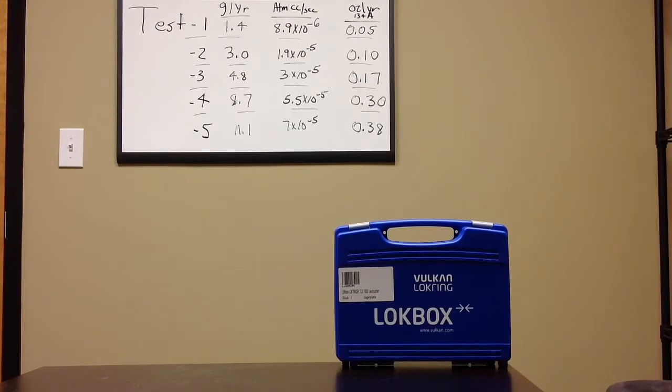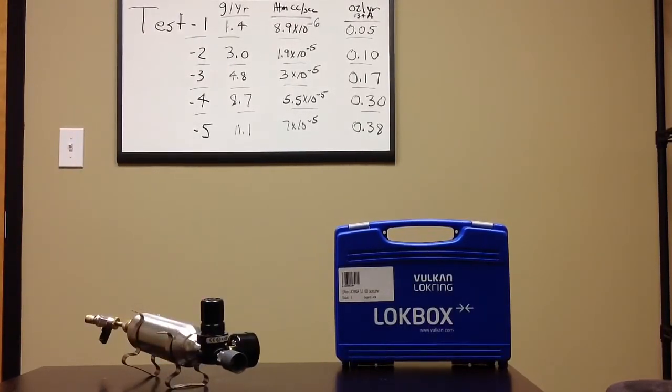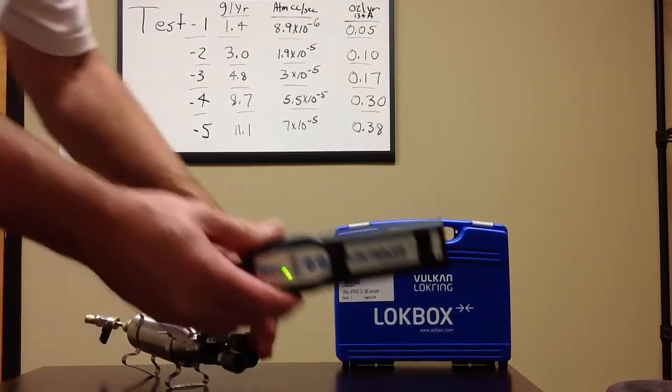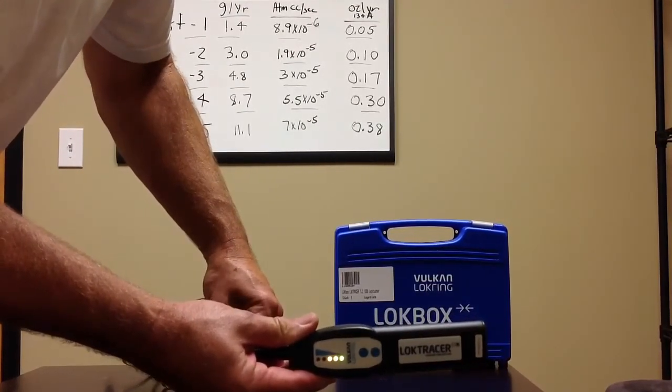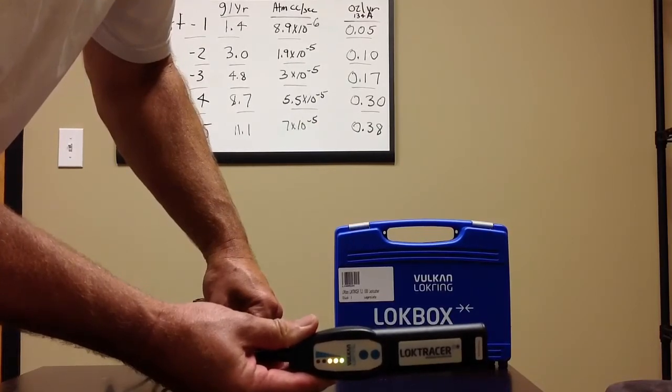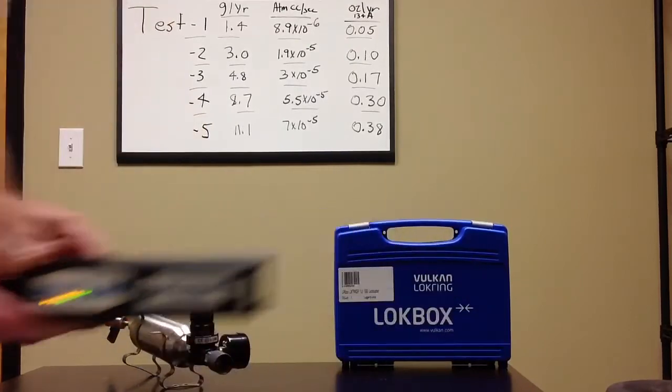Third test point, 4.8 grams per year, 0.17 ounces per year. Expose the leak to that. Strong response there.